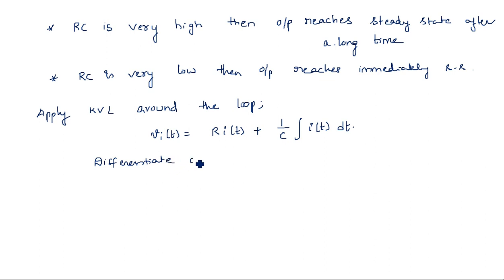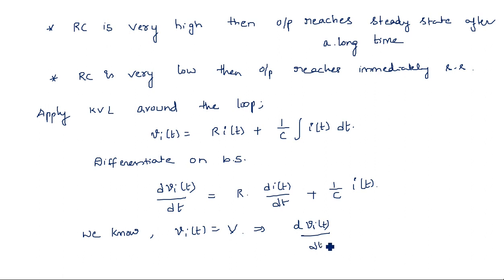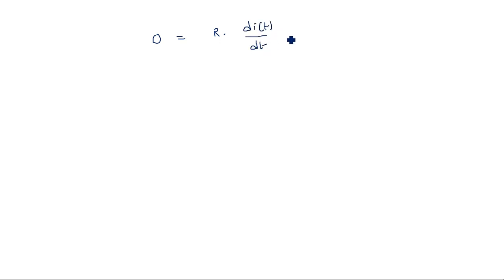Differentiating both sides: dV_i(t)/dt = R·di(t)/dt + (1/C)·i(t). Since V_i(t) is a step input V (a constant for t > 0), dV_i/dt = 0, giving: 0 = R·di(t)/dt + (1/C)·i(t).